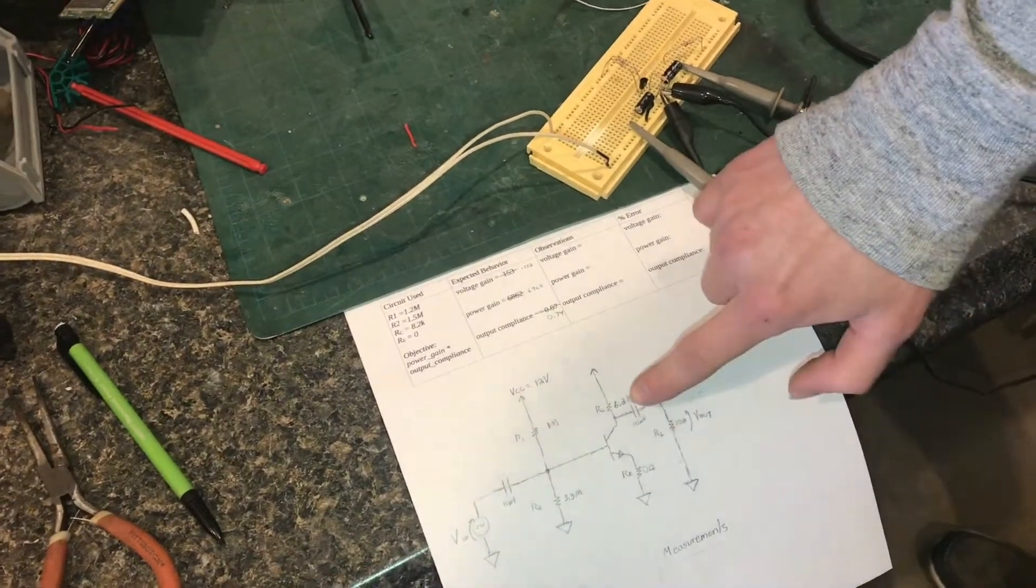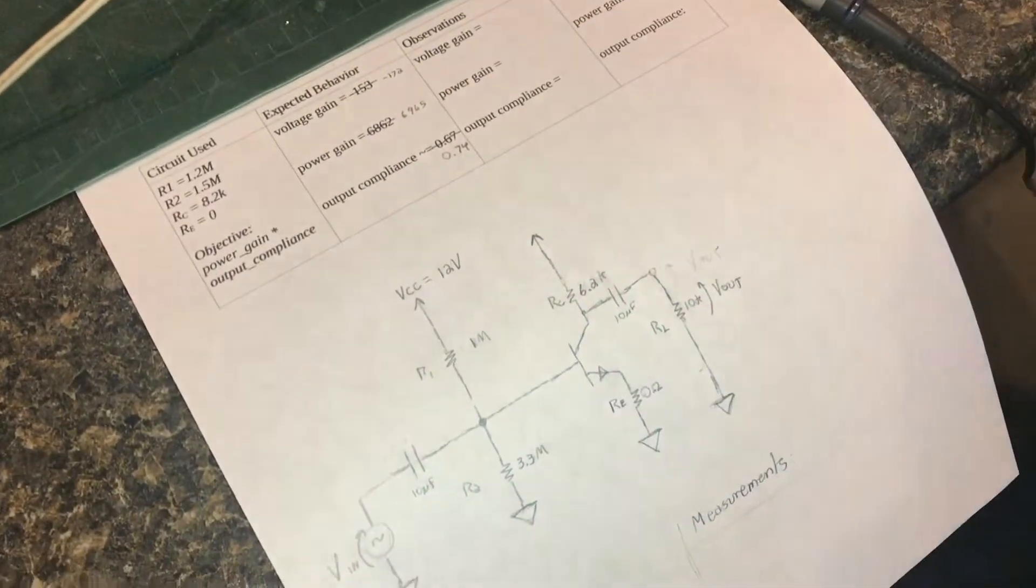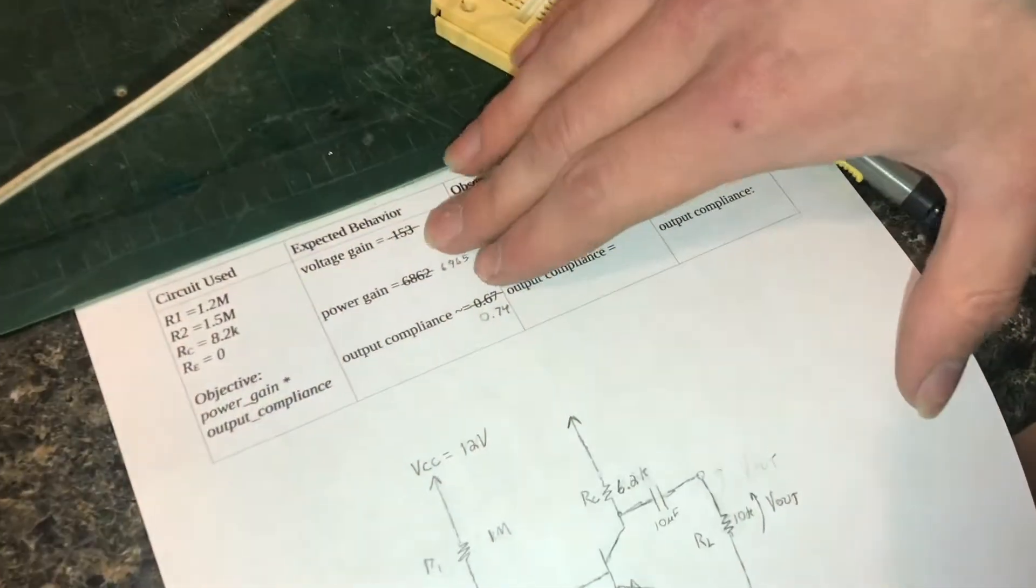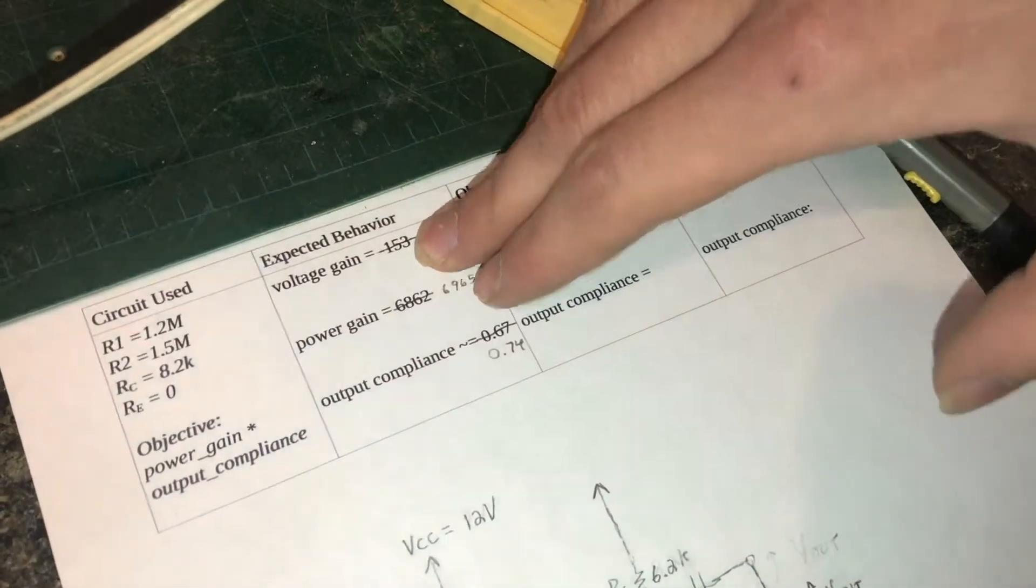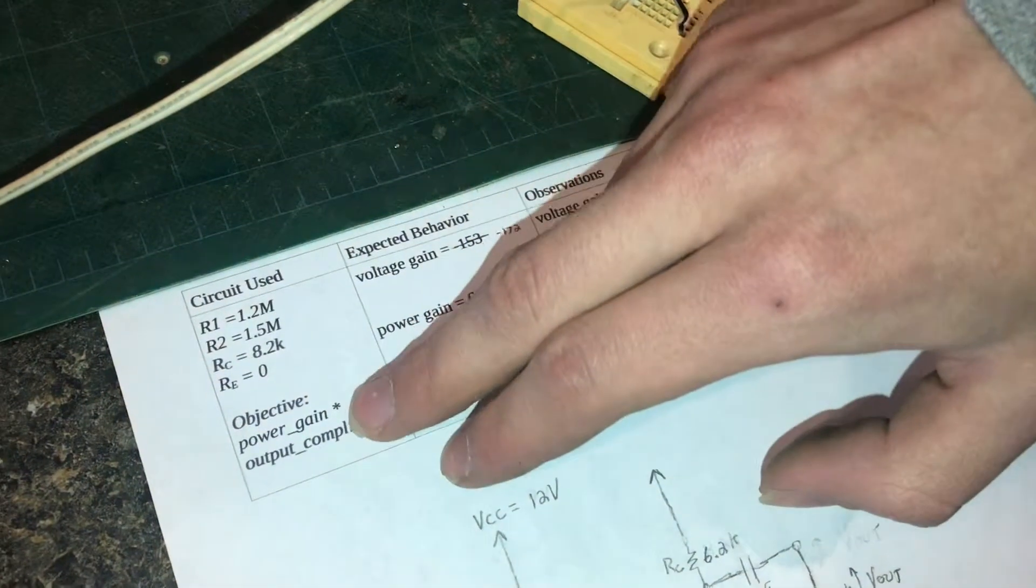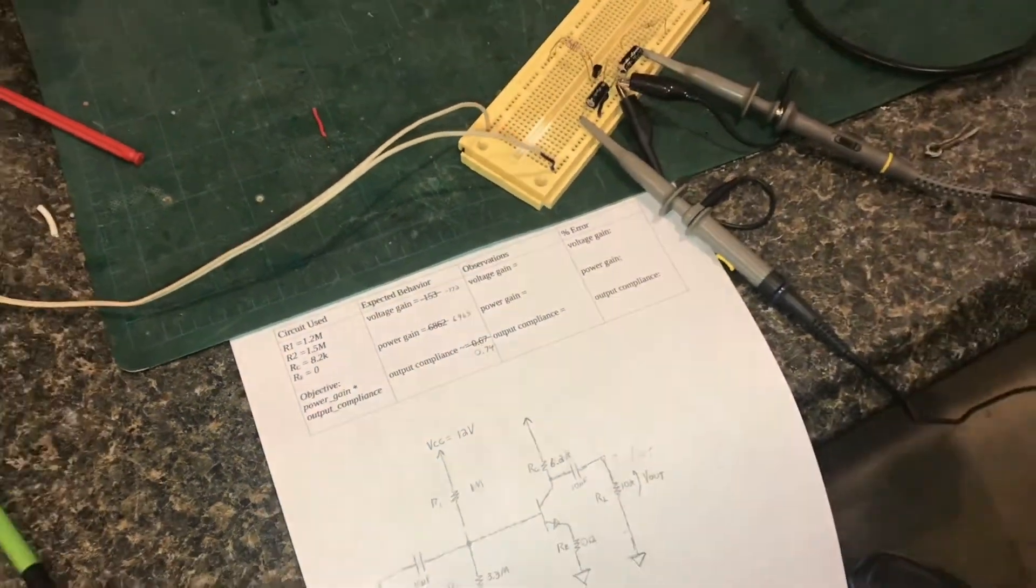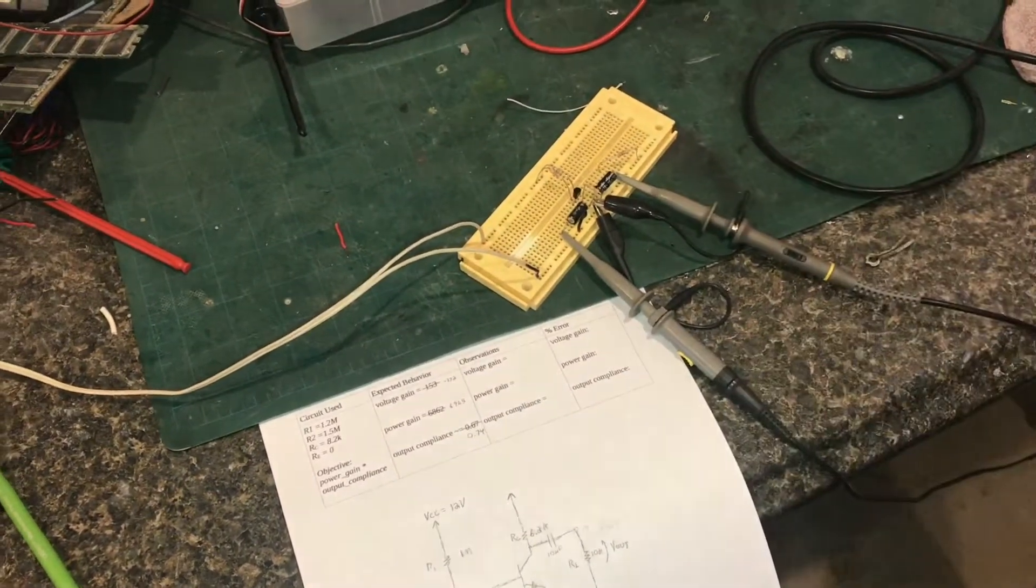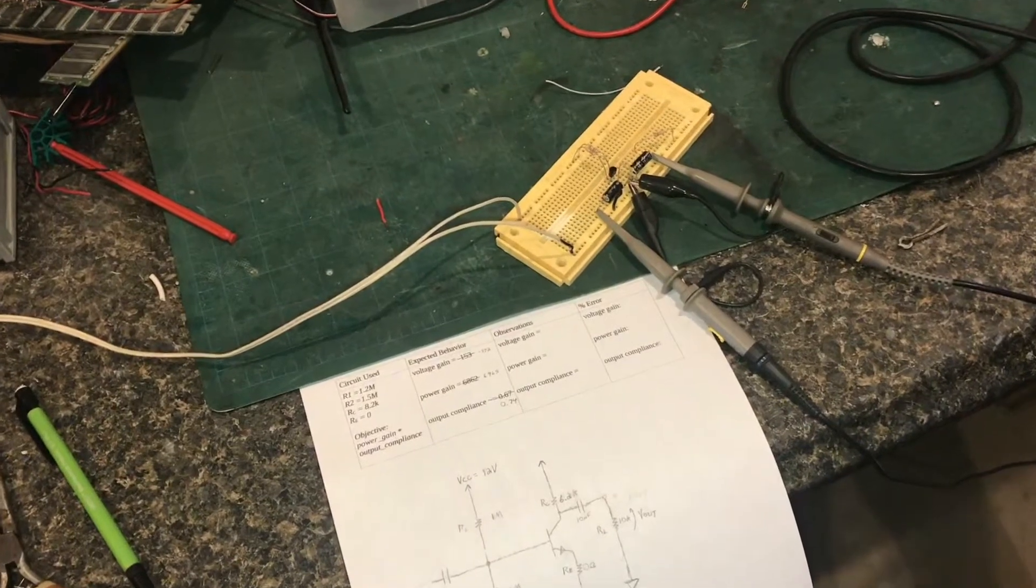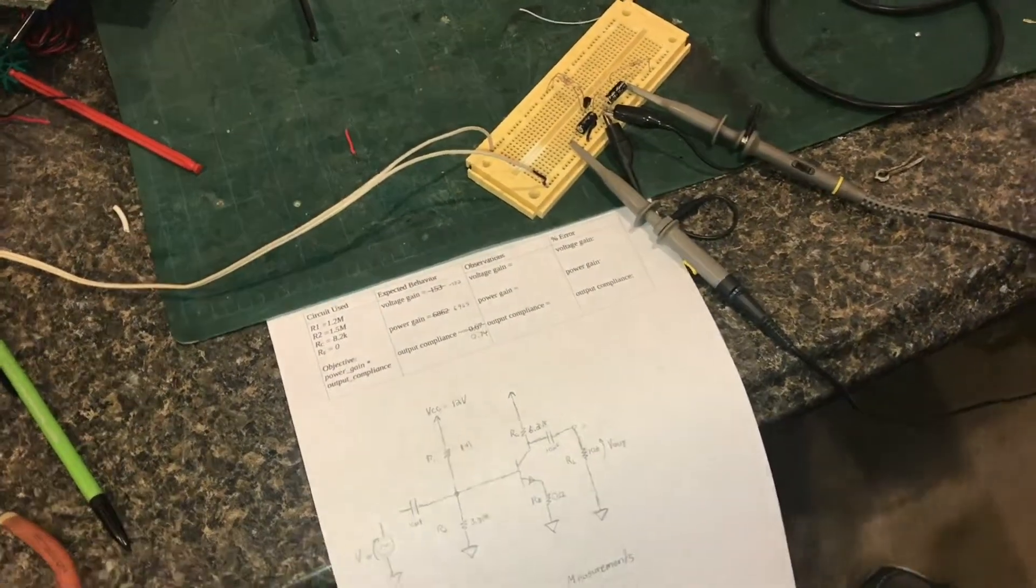that I had a computer program select resistor values in order to optimize the power output, or actually in this case it's optimizing power gain. Basically it's trying to make the computer program select resistors to give the best power output for the amplifier circuit.